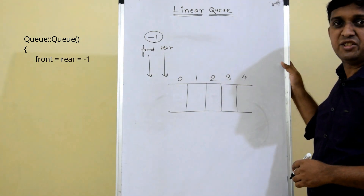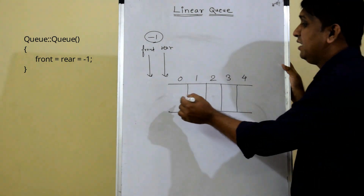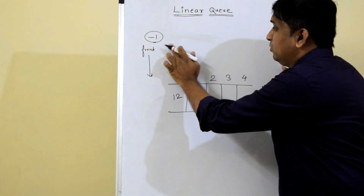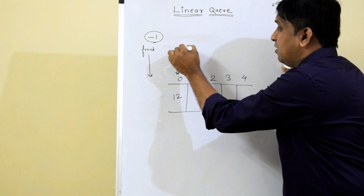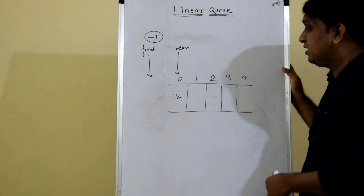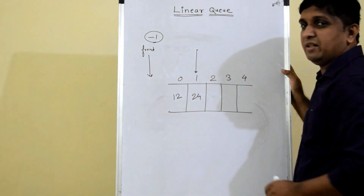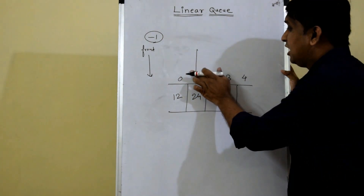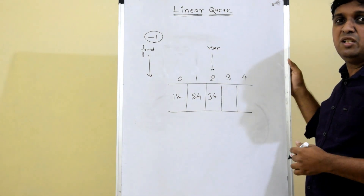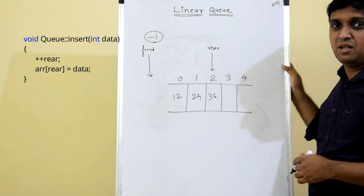When we insert the first element, say 12, we first increment rear from minus one to zero, then store the element at that incremented index. When we insert the second element, rear goes from zero to one and the element is stored at that incremented index. So the algorithm for insert is: first increment the rear value, then store the element at the incremented index.